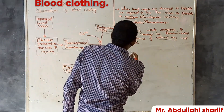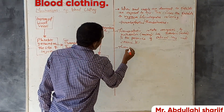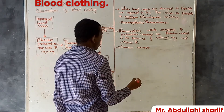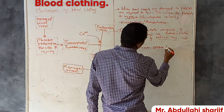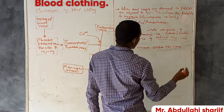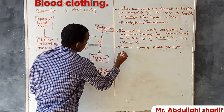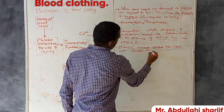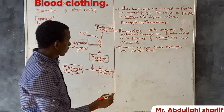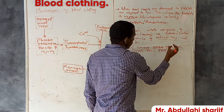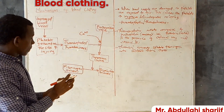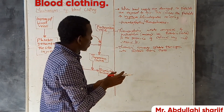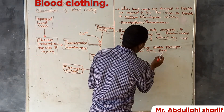So now the thrombin converts soluble fibrinogen into insoluble fibrin fibers. The thrombin converts soluble fibrinogen that is found in the blood into insoluble fibrin fibers.